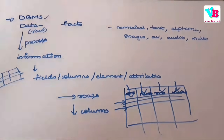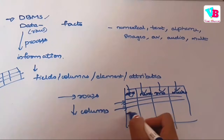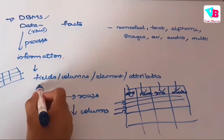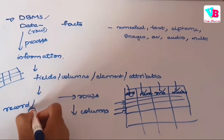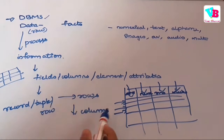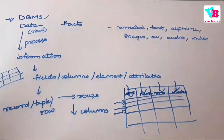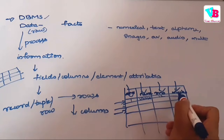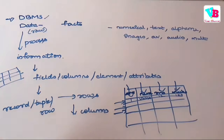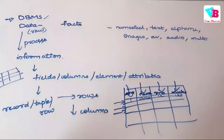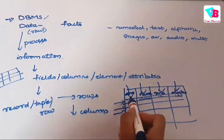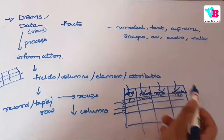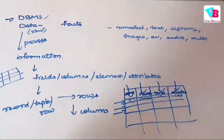Each row in a table is an entry. A row is also called a record or a tuple. For example, the entry: serial number 1, name Vamsi, role number 12, marks 100 — this entire row is one tuple, one row, one record. An individual value alone is not a record or tuple; only when combined as a complete row is it called a record, a tuple, or a row.